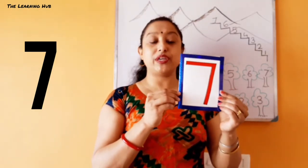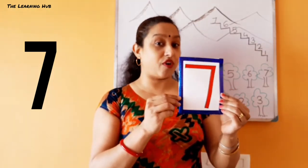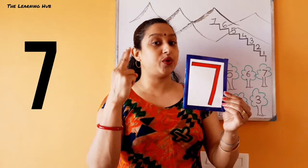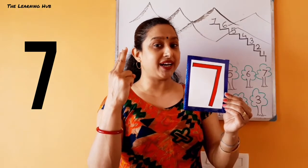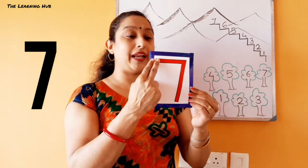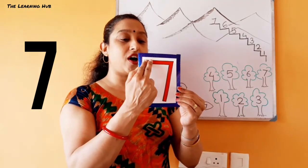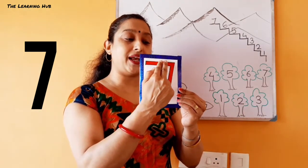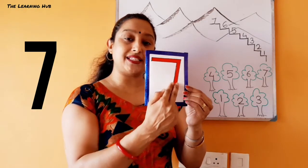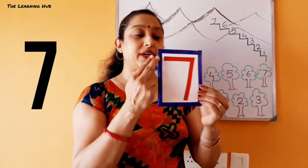Now we are going to trace number seven. For that we need to use these two fingers. Start from the left side, then draw a sleeping line, then draw a slanting line. One more time: sleeping line, slanting line.